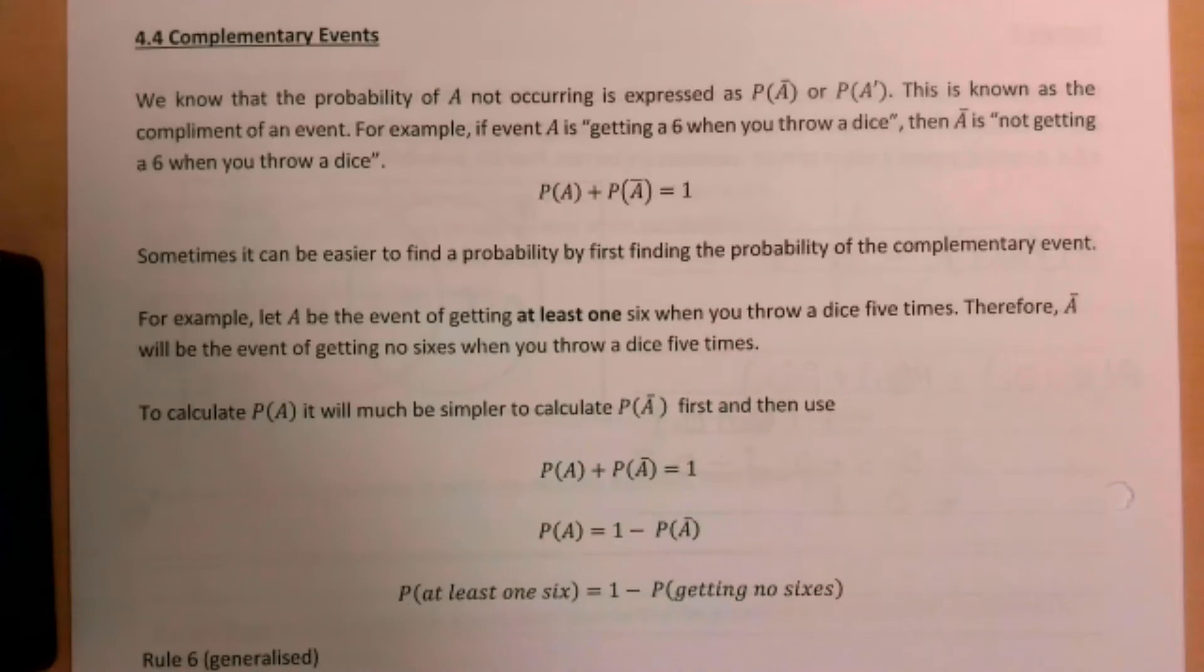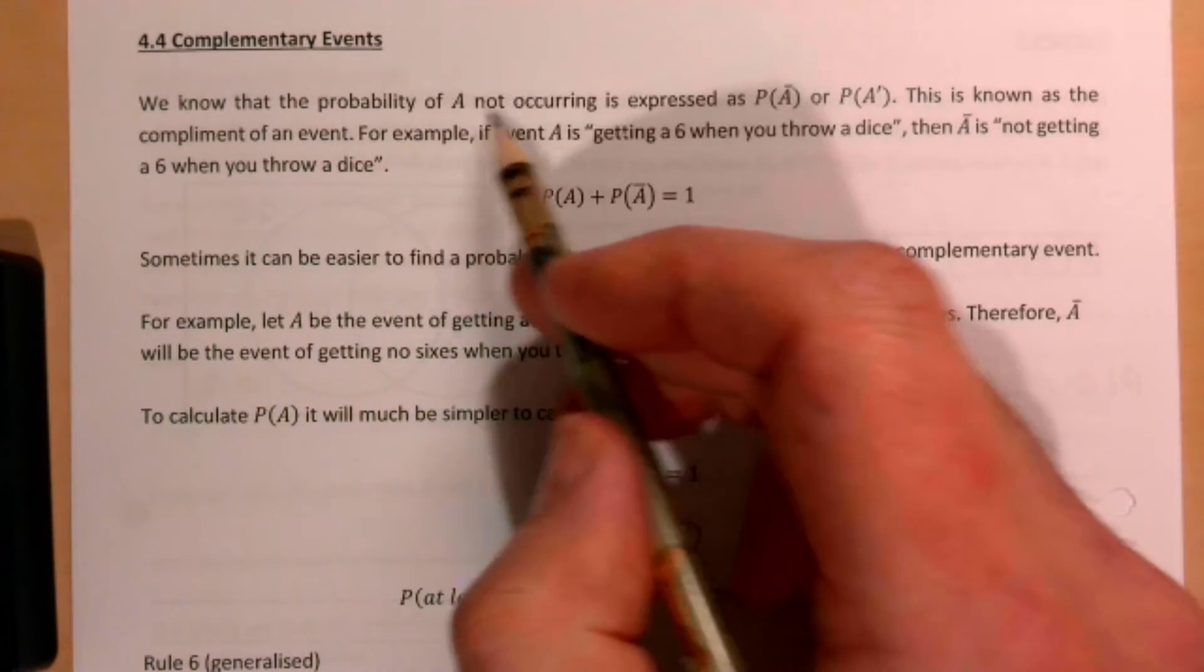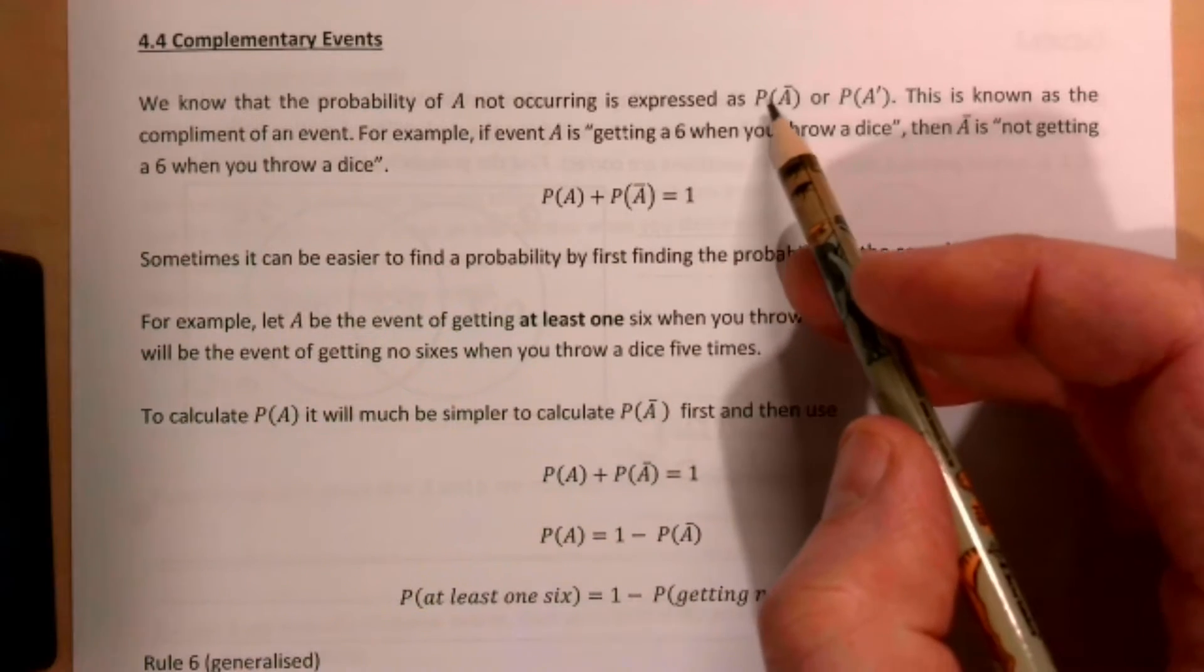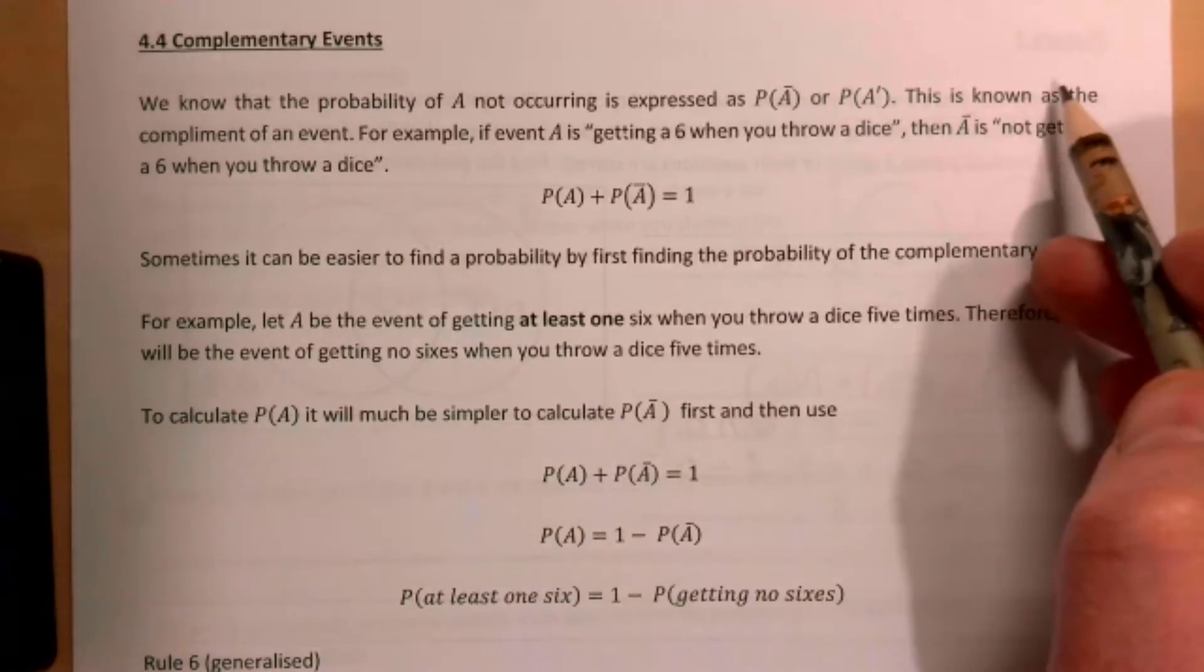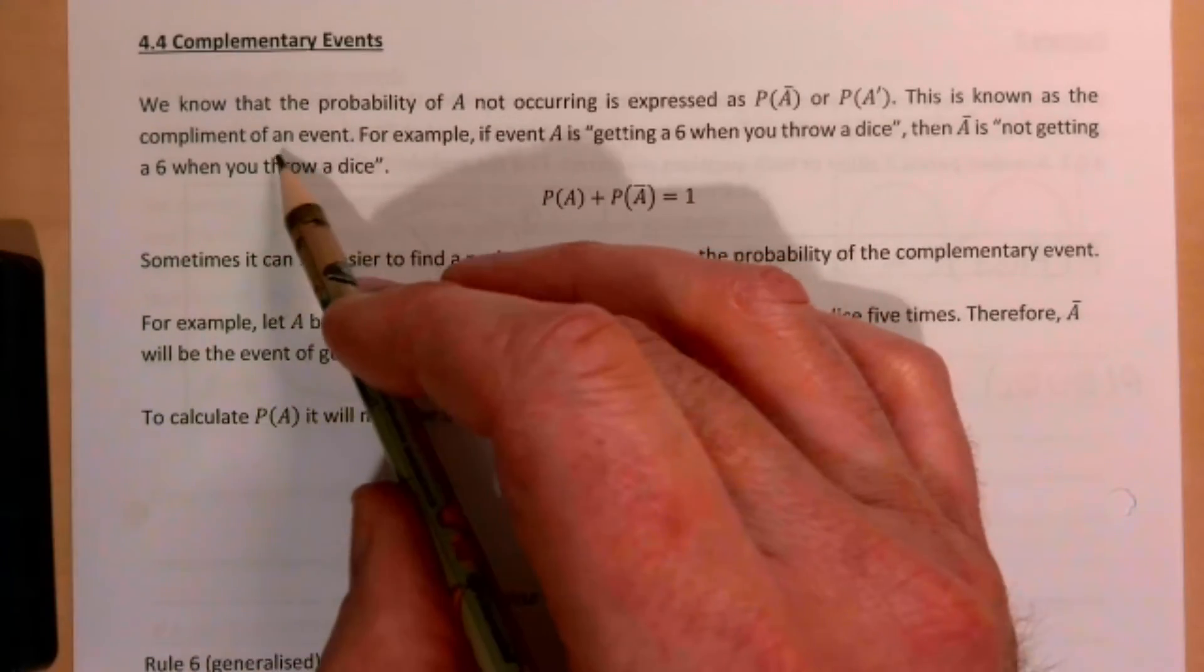This is AS Stats. We are on unit 4 and we're in 4.4 looking at complementary events, all within probability. So it says here we know that the probability of A not occurring is expressed as A with a line above it or A prime. This is known as the complement of the event.